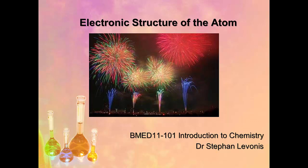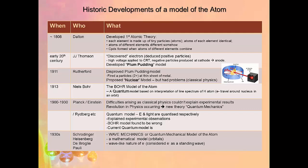Let's begin with historic developments of a model of the atom. In 1808, Dalton developed the first atomic theory, stating that each element is made up of tiny particles called atoms, and atoms of each element are identical to each other. We now know this isn't completely true because of isotopes. Atoms of different elements are different from each other, and compounds are formed when atoms of different elements combine.